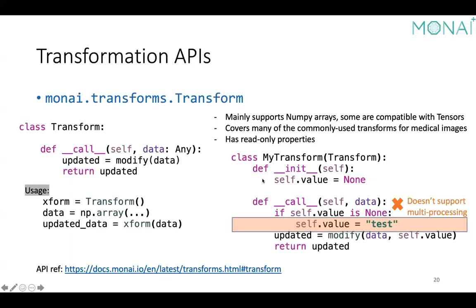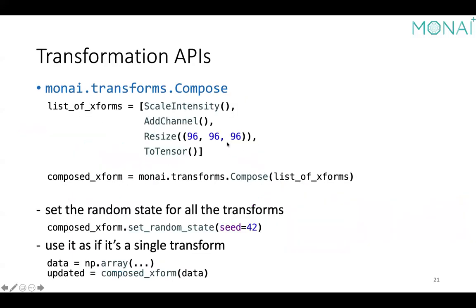The compose method is useful to stack a sequence of transforms and use them as if they were a single callable transform. We can set the random state on the compose instance, and it will automatically find all randomizable transformations in the list and set the seeds properly.